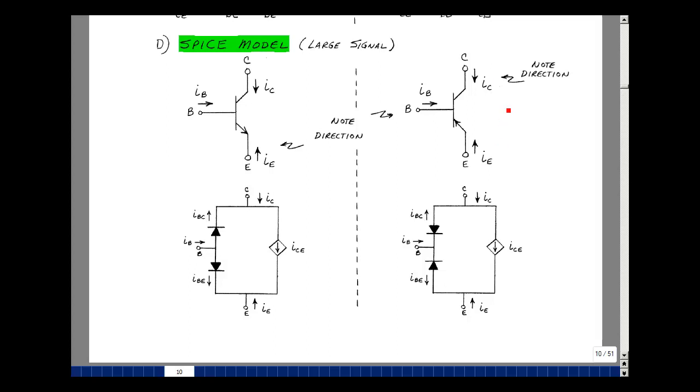The model that's used is two diodes and a controlled source, and likewise here, two diodes and a controlled source. The controlled source has the same direction, but the diodes are flipped.